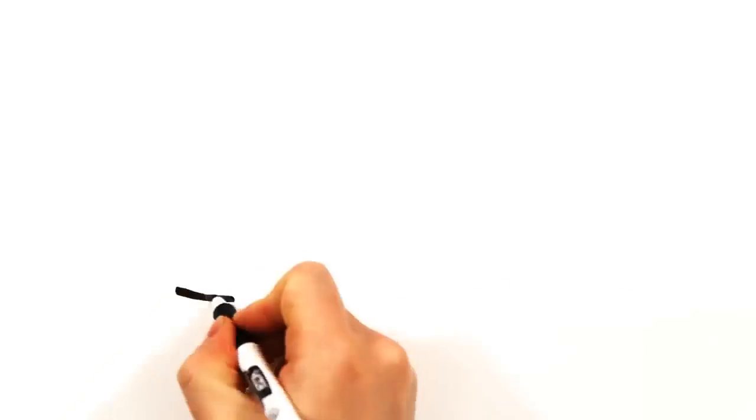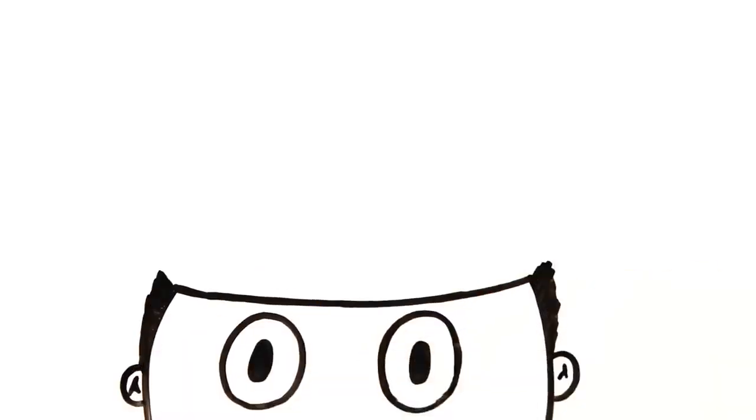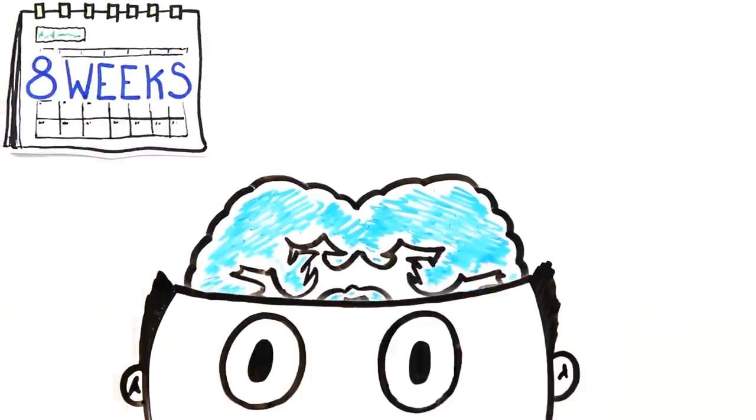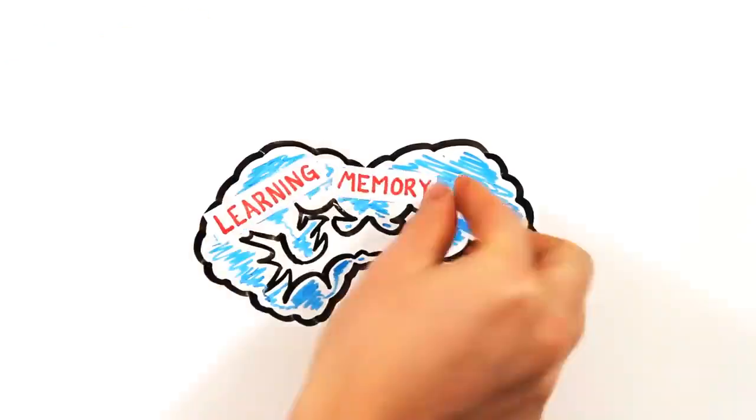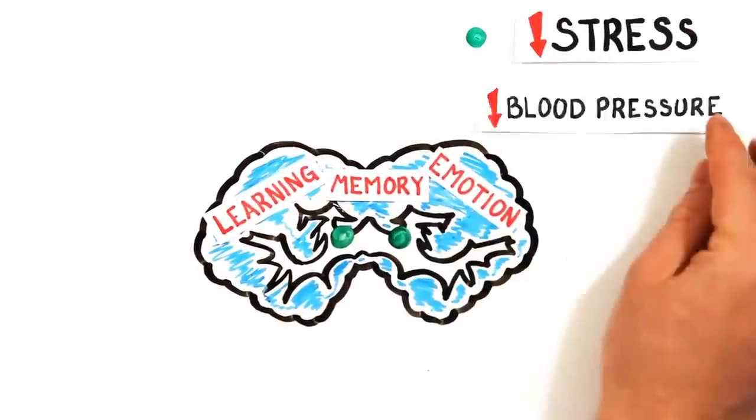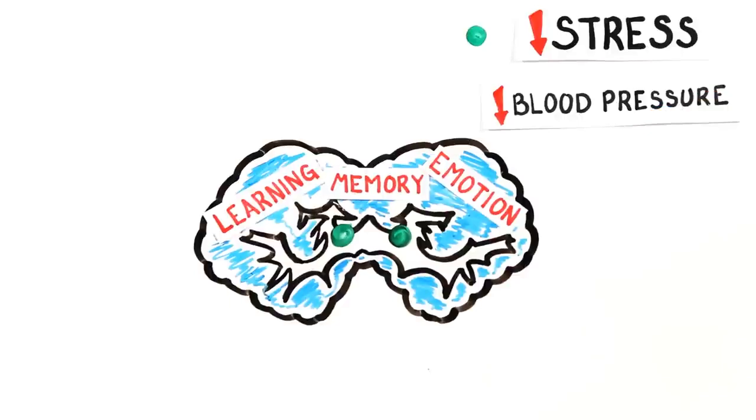And if that wasn't enough, it also physically changes our brain shape and size. Studies found that after 8 weeks of a meditation program, grey matter was more dense in areas associated with learning, memory processing and emotion regulation. And yet the amygdala, which deals with stress, blood pressure and fear, had decreased grey matter.